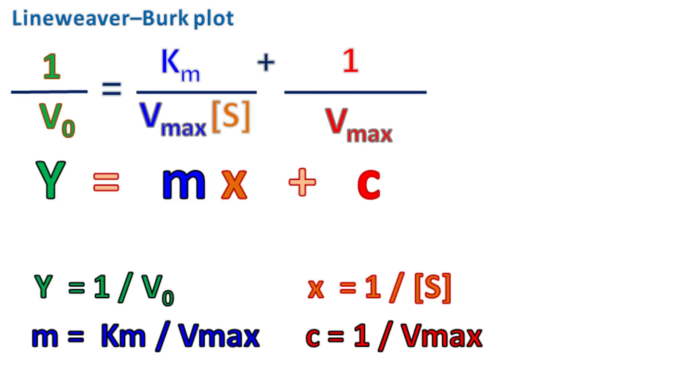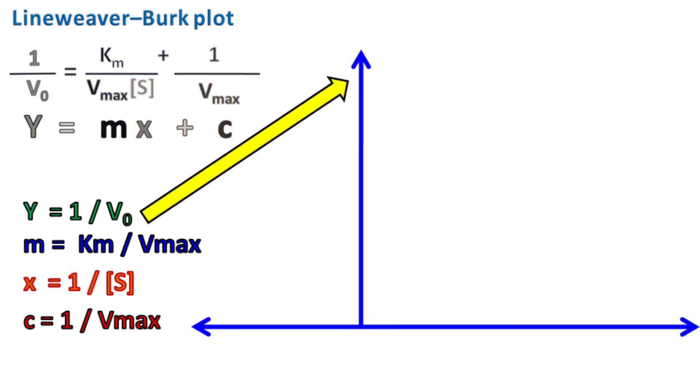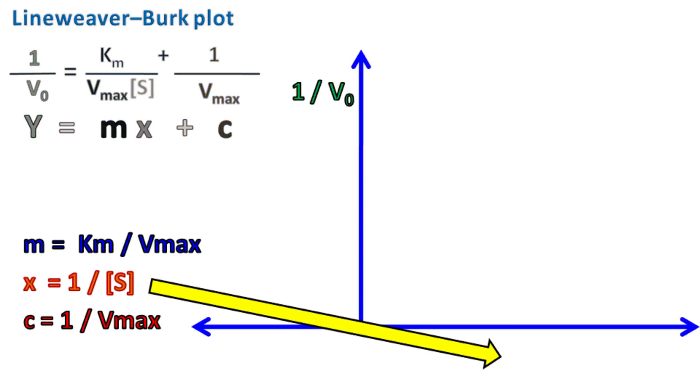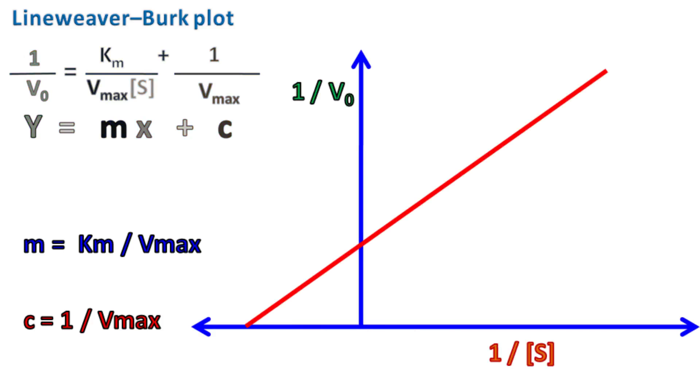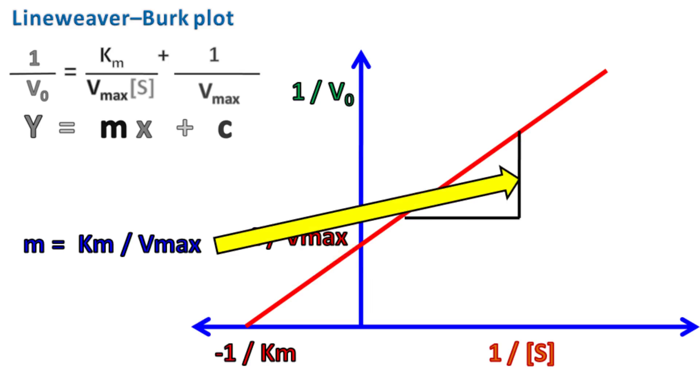So, the graph is plotted as 1 upon V0 versus 1 upon S. The intercept at Y axis is equal to 1 upon Vmax and the intercept on X axis is equal to minus 1 by Km. The slope of the graph will be equal to Km by Vmax.